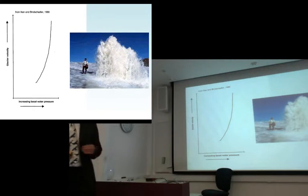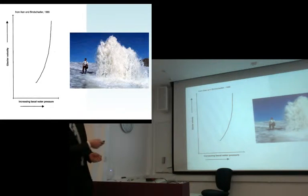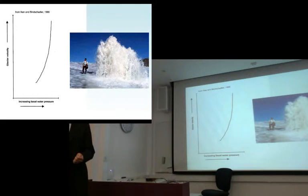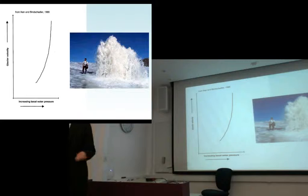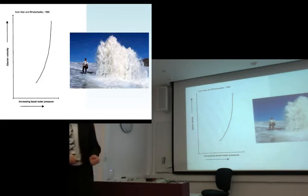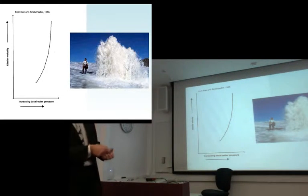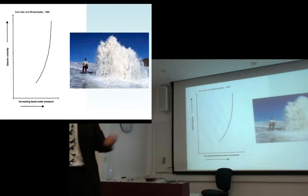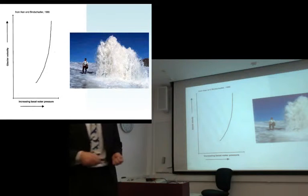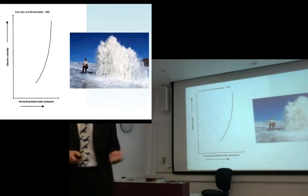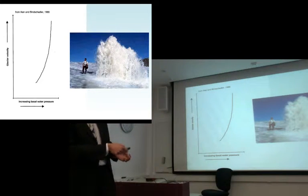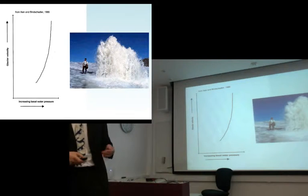A groundbreaking paper by Iken and Bindschadler in the Swiss Alps used boreholes drilled from the surface to the bed of glaciers, measuring the water level in those boreholes to get a measure of basal water pressure. They also measured the surface velocity, and they showed very clearly that as water pressure increased, so did the rate of glacier sliding. Glaciers with high pressure at the base are in effect floating, and the glacier can move more quickly. This is an artesian fountain at John Evans Glacier in the Canadian Arctic, where water is being driven up from the bed under high pressure — it's full of sediment, so it's clearly come from the bed.